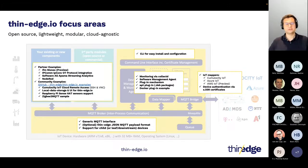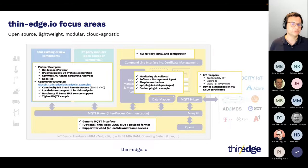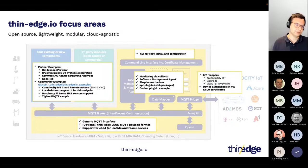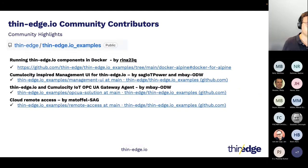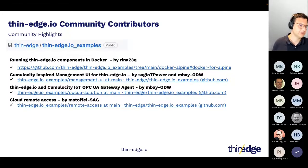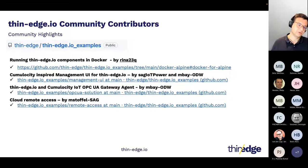One of the most important areas for us is the aspect of extensibility. We have not only strong partners in the project that contribute their own products and services that can integrate with ThinEdge, but we also have community members who are really extending and creating new implementations based on ThinEdge.io as a foundation. You can find these on GitHub in the examples repository. Highlights include running all the ThinEdge components in Docker — if you want to try it out quickly without using an actual device — or community-created local user interfaces to configure ThinEdge.